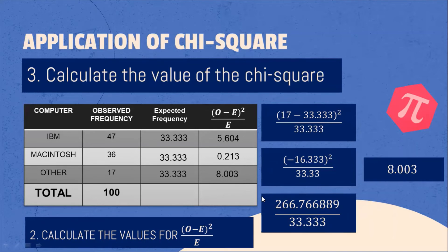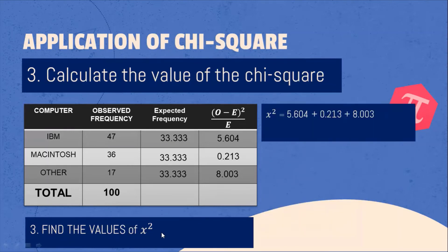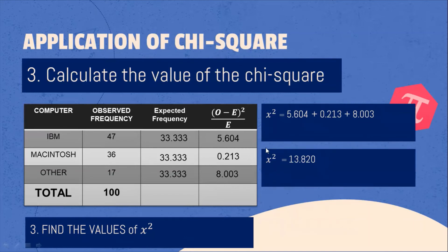Now let's find the value of chi-square. Simply add all the values: 5.604 plus 0.213 plus 8.003. The value of our chi-square is 13.820.